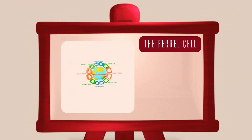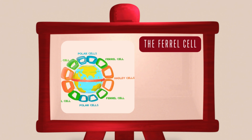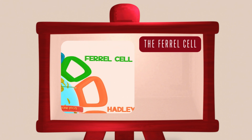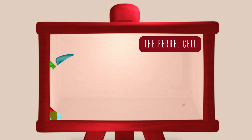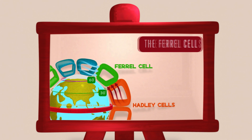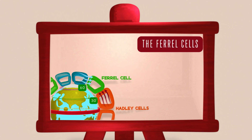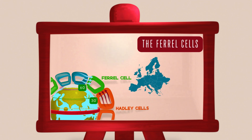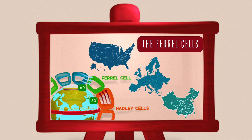Beyond the Hadley cell, we have two more important circulation cells: the Ferrel cell and the polar cell. The Ferrel cell sits between 30 and 60 degrees latitude. Here, colder air from the poles meets warmer air from the tropics, creating unstable conditions and changeable weather, like we see in much of Europe, the USA and China. This is often where many temperate climates are found.